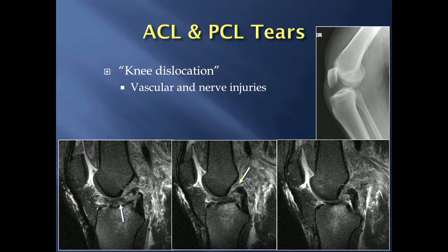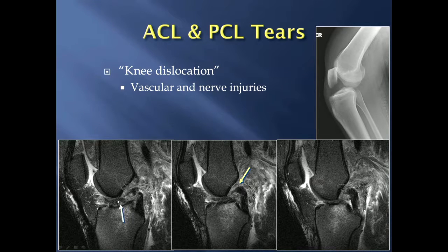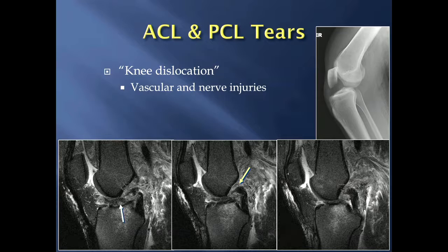Combined anterior and posterior cruciate ligament tears are often called a knee dislocation because of the degree of dislocation required to rupture both ligaments. The key issue is that vascular and nerve injuries can occur with a dislocated knee, so orthopedic surgeons will check for pulses and sensation distal to the knee, as these cases can require additional surgeries beyond reconstruction of the two ligaments.